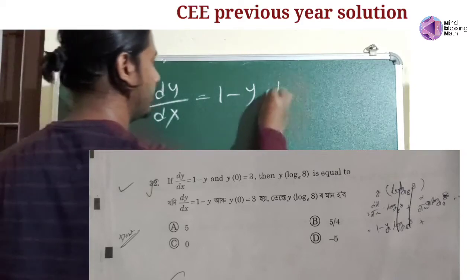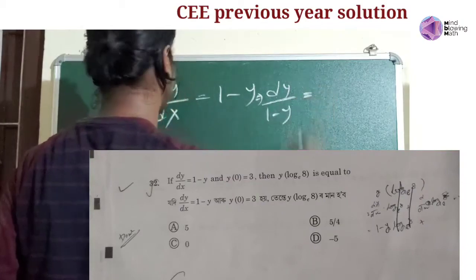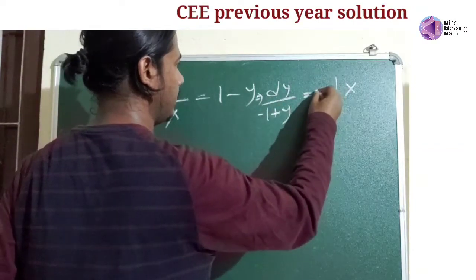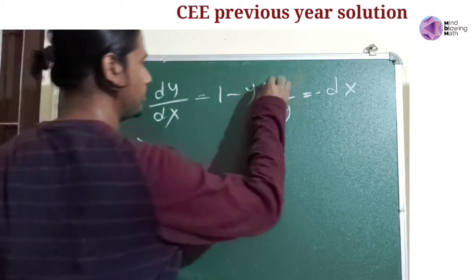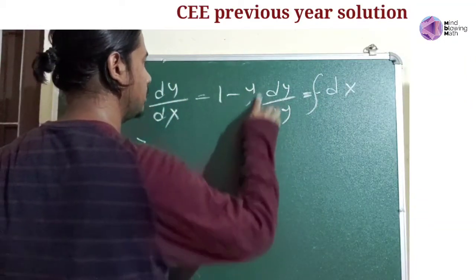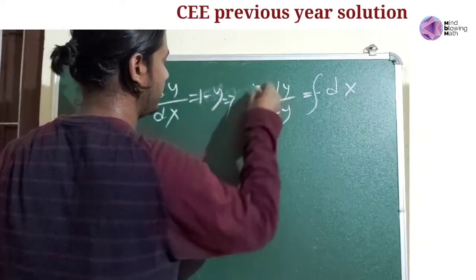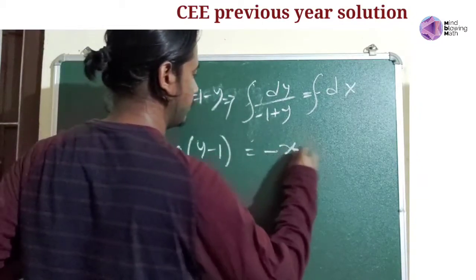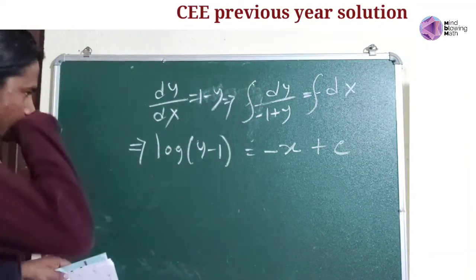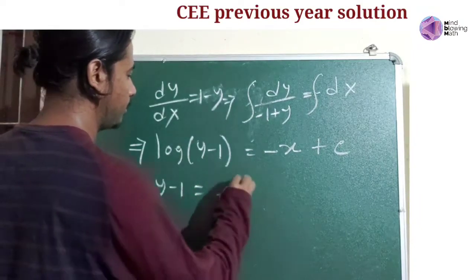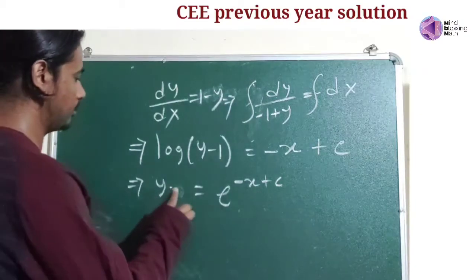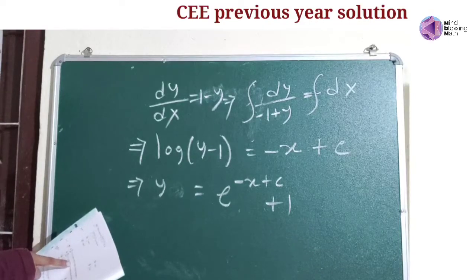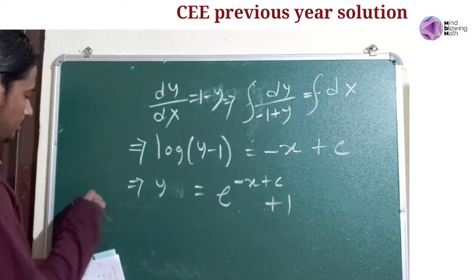So dy by (1 minus y) is equal to dx. Integrating both sides: minus log(1 minus y) equals x plus c. One of the nodes is equal to 3. y minus 1 is equal to e to the power (minus x plus c). So y is equal to e to the power (minus x plus c) plus 1. First condition: y is equal to 3.